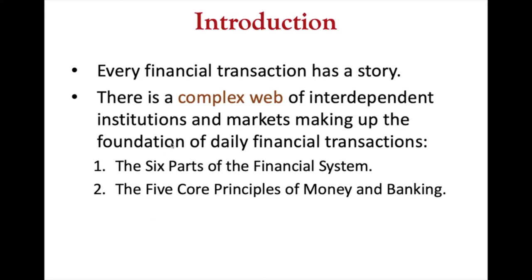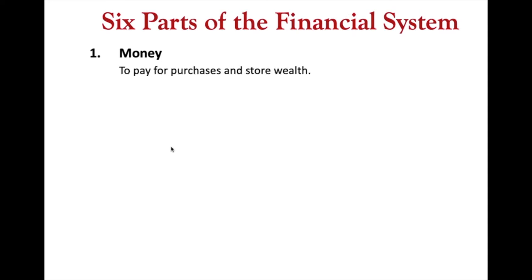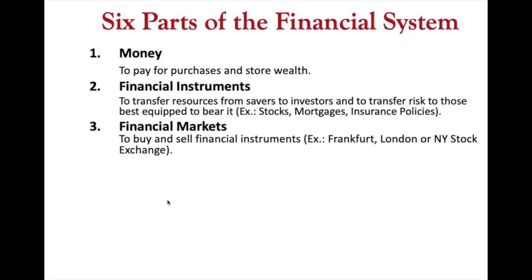The first one is money, that you use for purchasing, storing, and wealth. The second one is financial instruments — things like mortgages, insurance policies, stocks, bonds, etc. that you can buy. Then we have financial markets — stock exchange places like Hong Kong, Tokyo, New York, Frankfurt, etc.